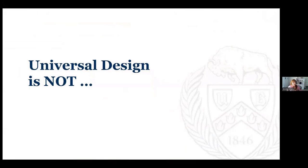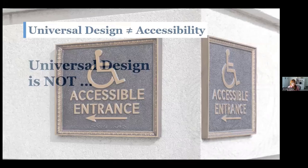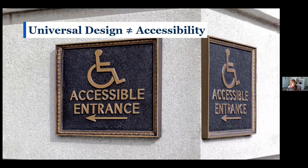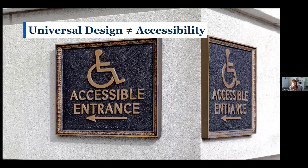Sometimes when discussing universal design, it's easiest to describe what it is not, because it's so often misunderstood. It is not accessibility. Both accessibility and UD started with the disability rights movement in the 1960s, which led to accessible design and breaking down barriers for people with disabilities. But universal design is not accessible design, barrier-free design, assistive technology, or merely about functions such as prosthetics — and it's definitely not focused only on people with disabilities. Universal design is beneficial for everyone, sometimes evolves from assistive technology or ergonomic design, and involves an evolutionary, process-oriented approach with no end state.